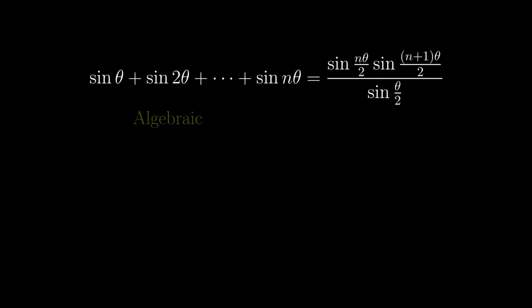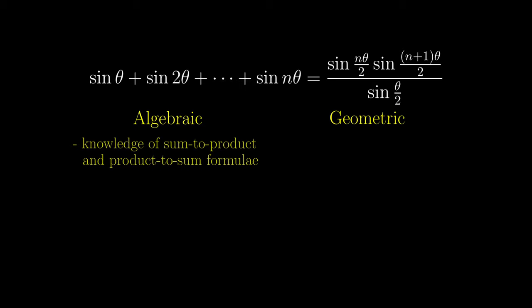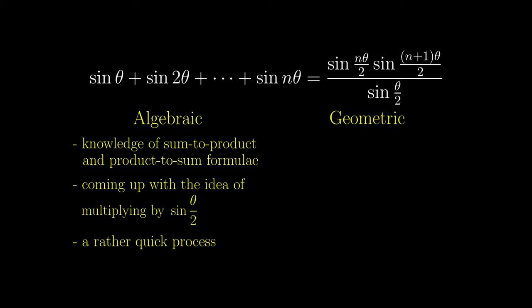Now that you have seen both derivations of the same formula, you can judge by yourself which of them is superior. However, I would provide some objective points for you to consider. For the algebraic method, of course you need to know the sum-to-product and product-to-sum formulae, and that multiplying by sin θ over 2 is a good idea, especially if you don't already know the formula.